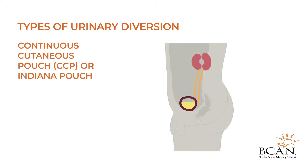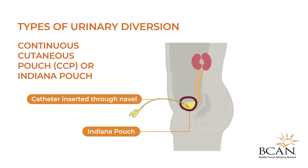In some cases, a continuous cutaneous pouch (CCP), or Indiana pouch, is created using the small and large intestines to create an internal system of urinary storage. This pouch or reservoir is connected to the skin by a stoma, a small surgically created opening on the stomach, and is periodically drained via a thin tube or catheter.